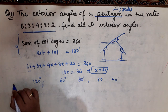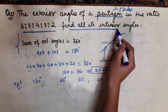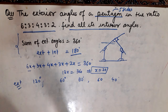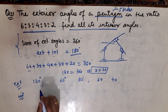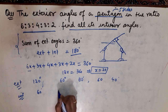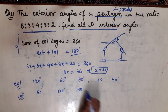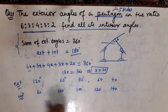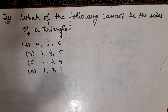These are the exterior angles, but the question asks for interior angles. Since exterior plus interior equals 180 degrees, subtract each exterior angle from 180. So 180 − 120 = 60°, 180 − 60 = 120°, and so on. These are the interior angles of the pentagon.